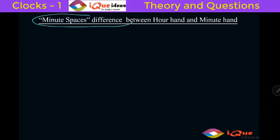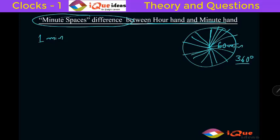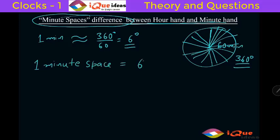The concept of minute spaces difference. This has nothing much to do with the calculations; it is a very simple understanding. In the entire clock, if you look at the minutes, the entire clock is divided into 60 minutes and the total angle is 360 degrees. So clearly one minute is equivalent to 360 divided by 60, which is 6 degrees. So one minute space is actually equal to a 6 degree angle.